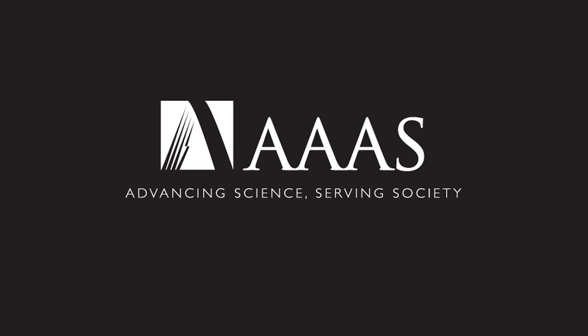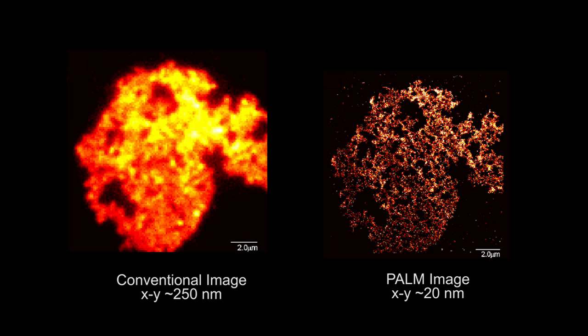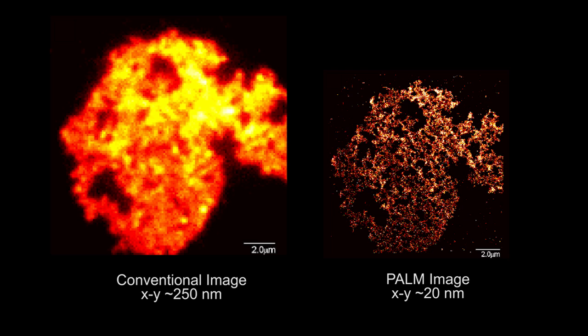This is just an example of the difference in imaging quality that you get with conventional versus point localization microscopy. Both these images represent an aggregate of polystyrene beads, where the beads are 50 nanometers in diameter. To the left is the appearance of these beads imaged using conventional microscopy, where your XY resolution is no better than about 250 nanometers.